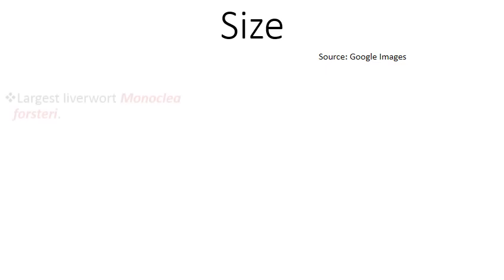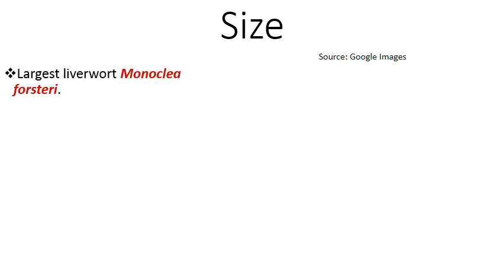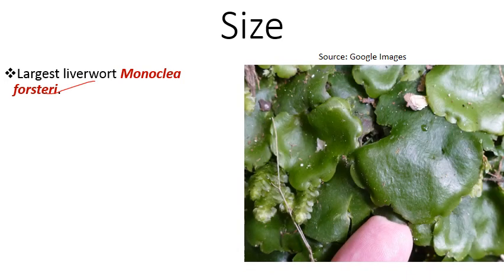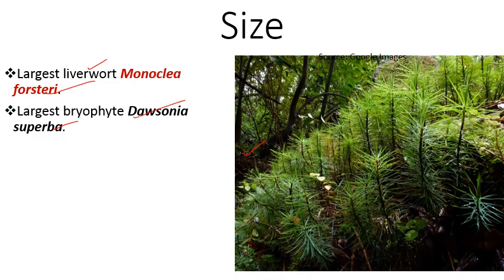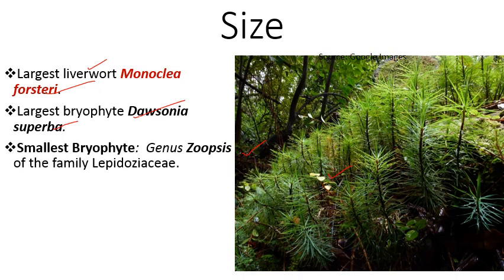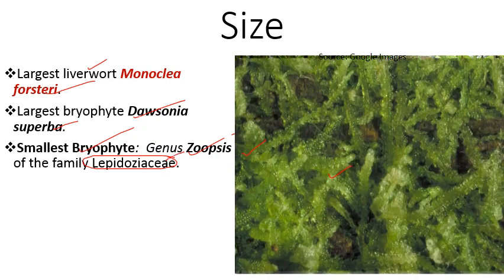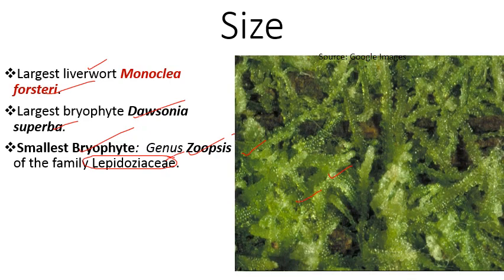Regarding size: the largest liverwort is Monoclea forsteri. The largest bryophyte overall (moss) is Dawsonia superba. The smallest bryophyte belongs to the genus Zoopsis, of the family Lepidoziaceae.